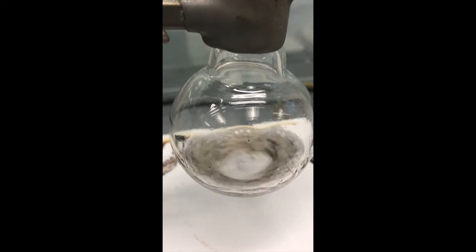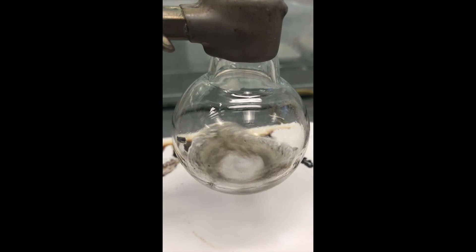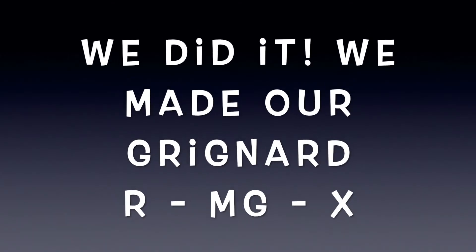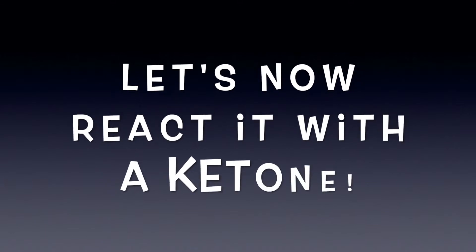At the 30-minute mark, I turned the hot plate off, allowing the reaction to come back to room temperature. We made a Grignard reagent. Yay! Congratulations! Now let's go ahead and react that with a ketone and make our final product.